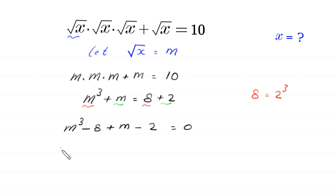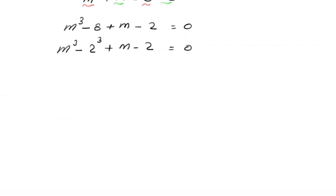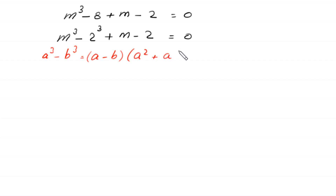Next, we write this as m cubed minus 2 cubed plus m minus 2 is equal to 0. Now, by using the algebraic identity: a cubed minus b cubed is equal to a minus b times a squared plus ab plus b squared.